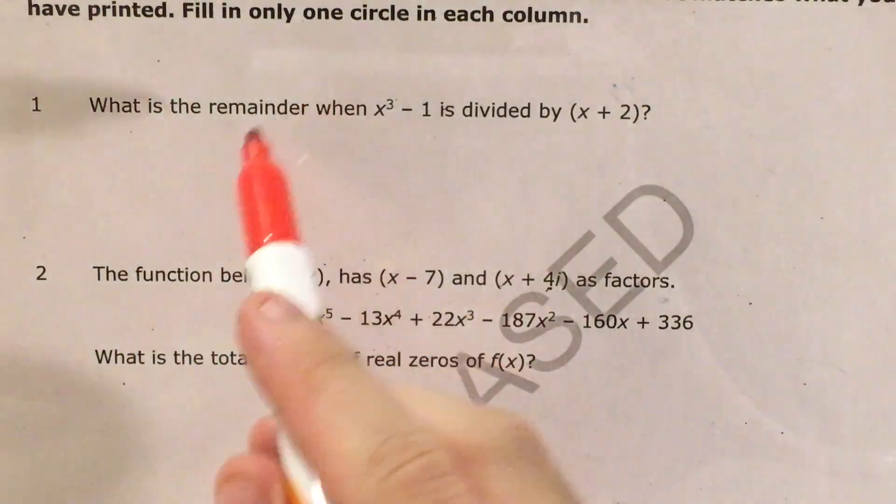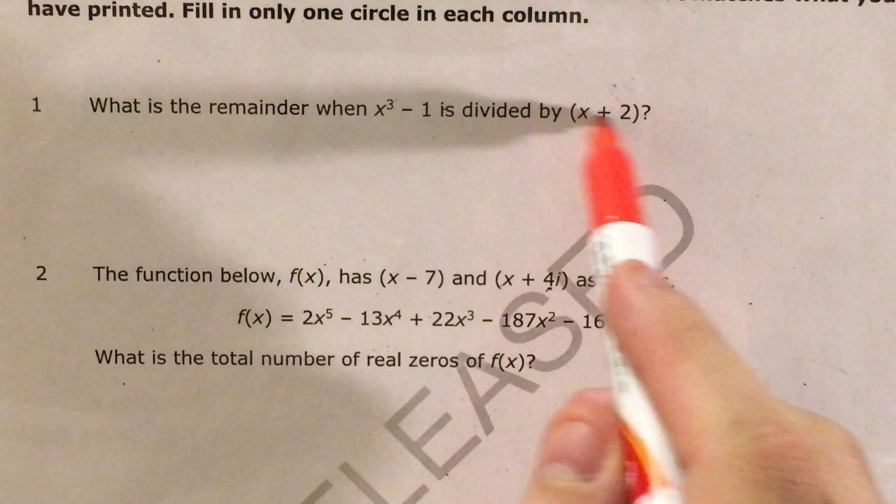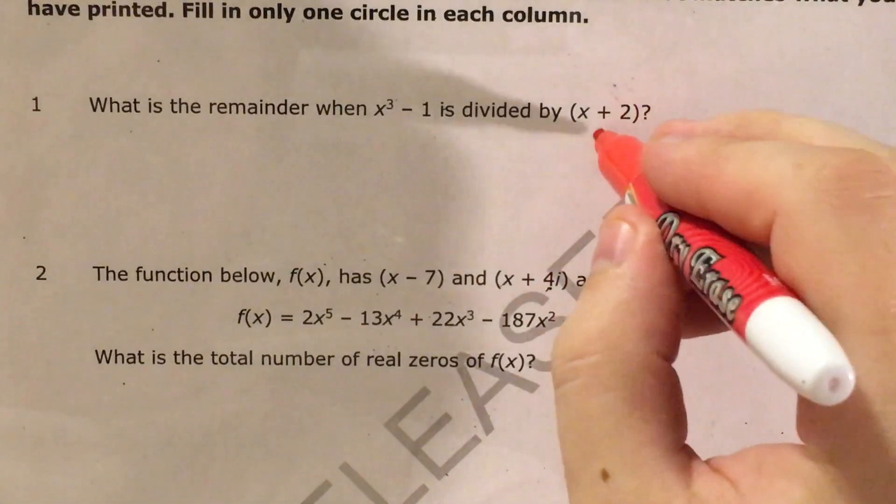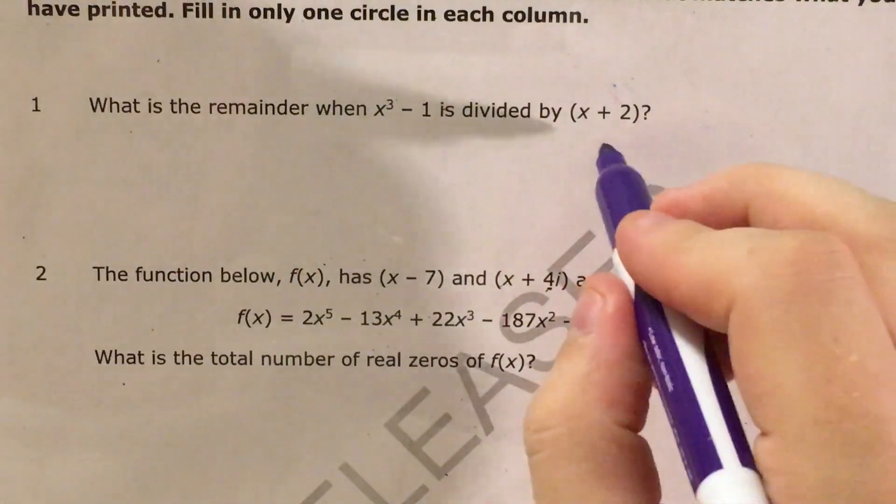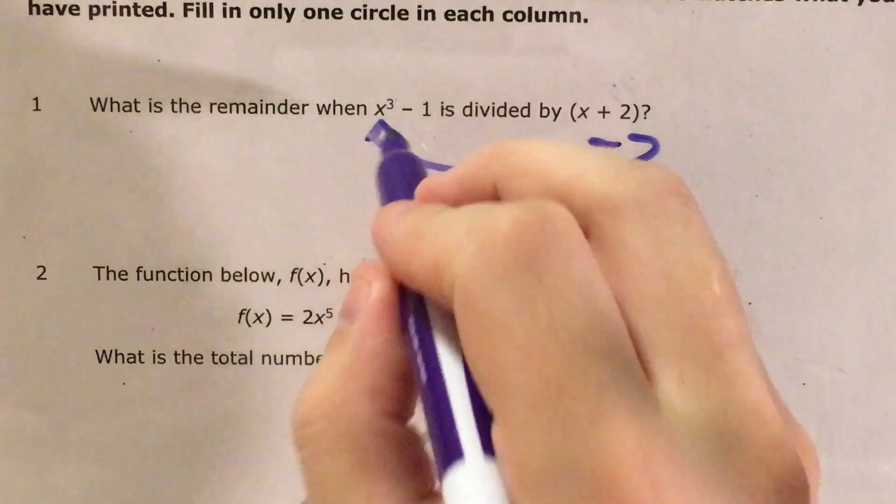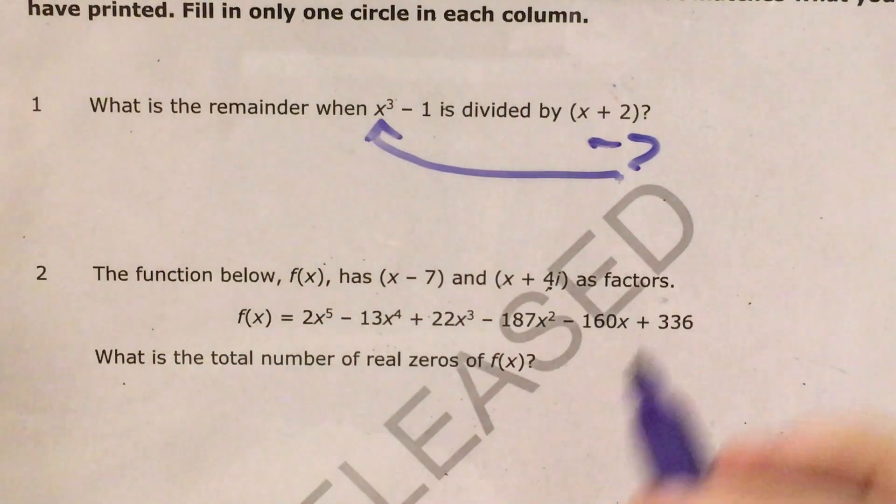So our answer, the remainder when the polynomial is divided by the linear factor, is the same thing as when we flip the sign of this number, make it negative 2, and plug it in for x in the polynomial. And that answer is negative 9.